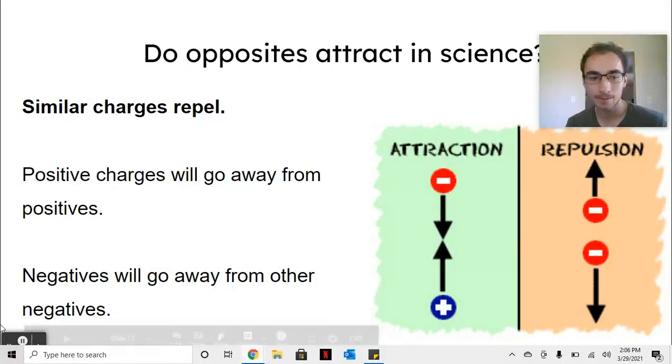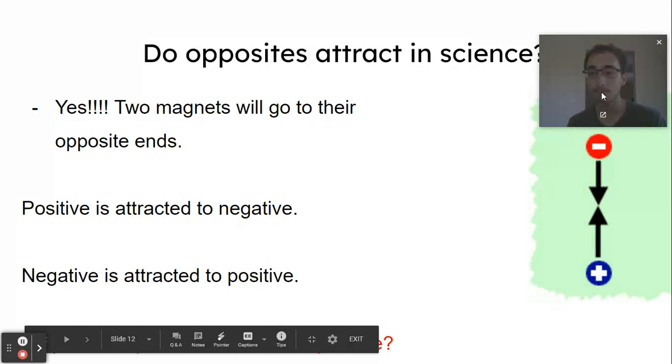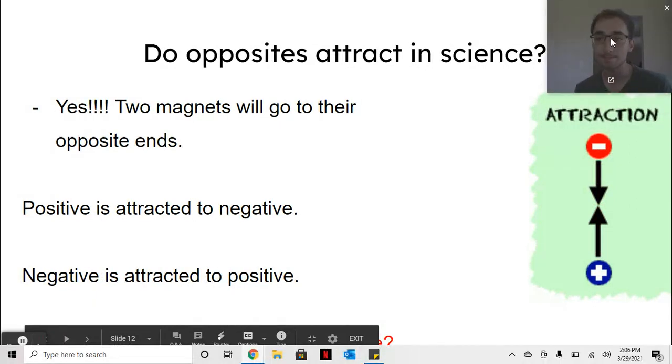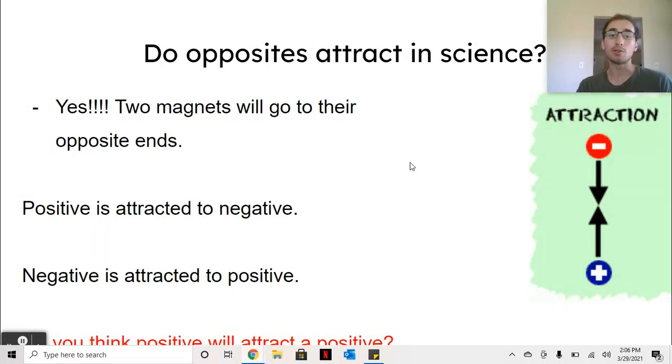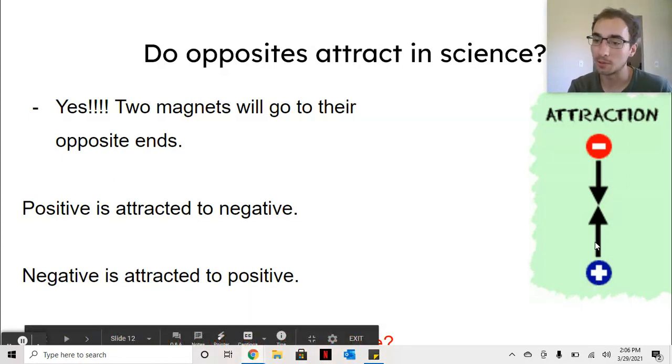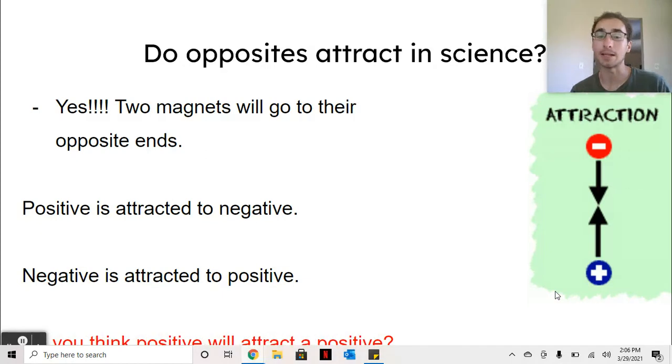Okay? In science, if you think about like magnets, two magnets will go to their opposite ends. Or, in the case of like electricity or atoms, positive will be attracted to negative. They, when I say attracted, that means they go together. So they'll have a tendency to want to be together. So, it looks like this. That's attraction. And so, in science, opposites do attract.